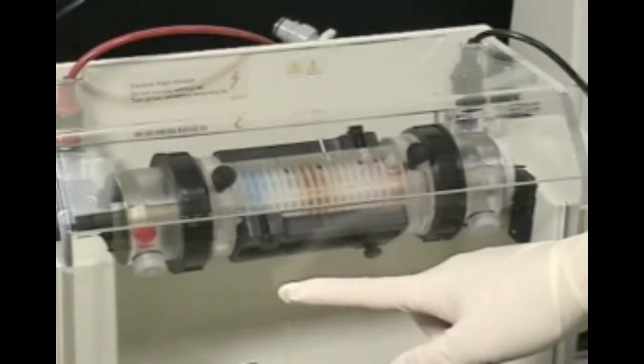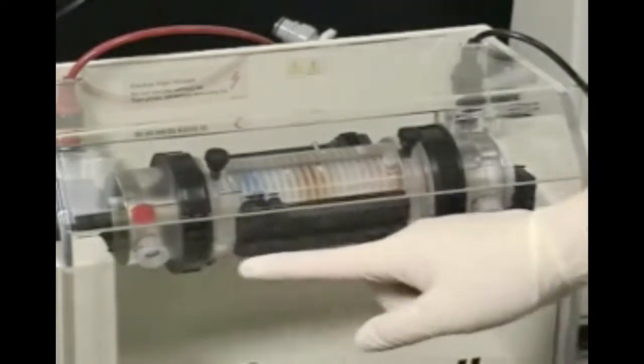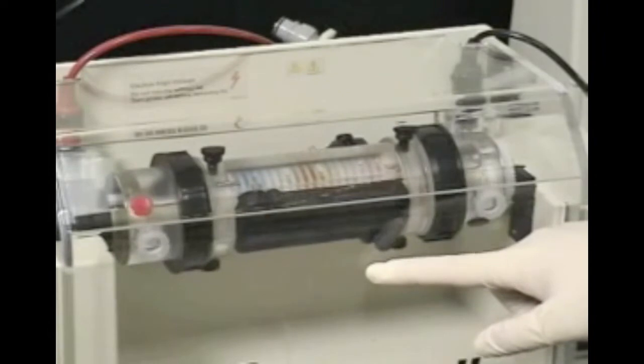After several hours of isoelectric focusing in the rotophore cell, however, these proteins become separate and their individual colors can be seen.